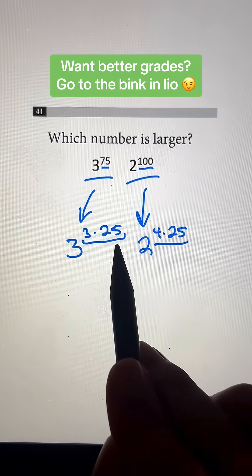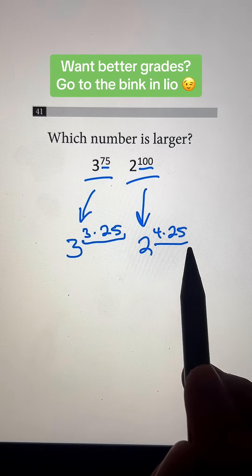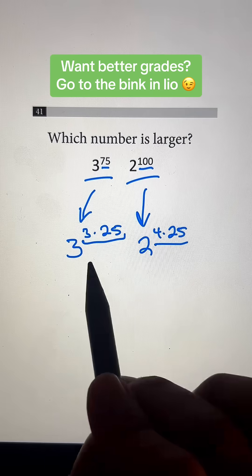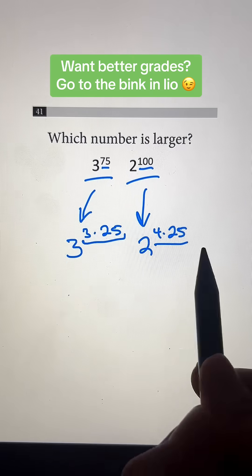And now we can see that there's 25 in both of the exponents. But what's even better is that our bases are able to be simplified so that 25 is the only thing on the top.